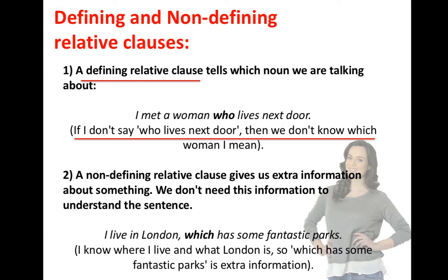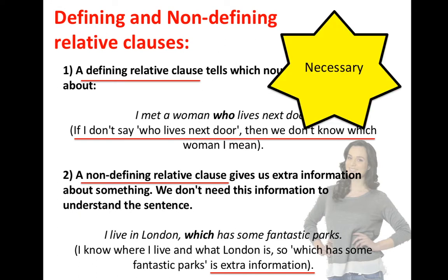A non-defining relative clause gives us extra information about a noun — information we don't need to understand the sentence. For example: 'I live in London, which has some fantastic parts.' I already know where I live and what London is, so 'which has some fantastic parts' is extra information.